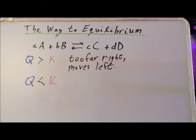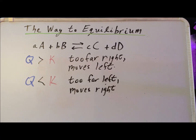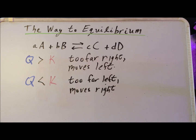Now, let's suppose that the reaction quotient Q is less than the equilibrium constant. That tells us that the concentration of products is smaller than it would be at equilibrium, and/or that the concentration of the reactants is too high relative to equilibrium. Therefore, for the system to move towards equilibrium, which it wants to do, it is going to move right.